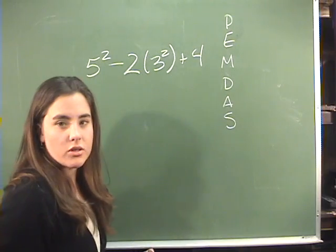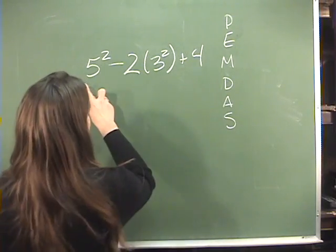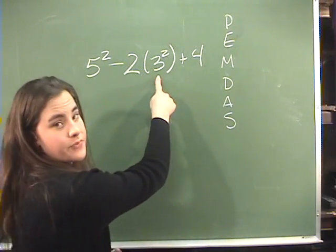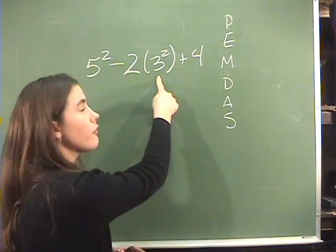well, parentheses come first. Do I have parentheses? Yes, around the three squared. So I need to do that first.